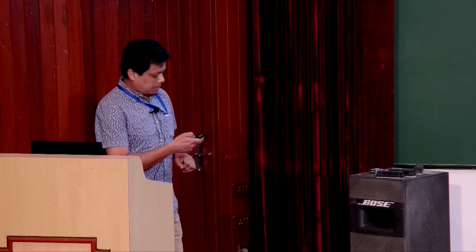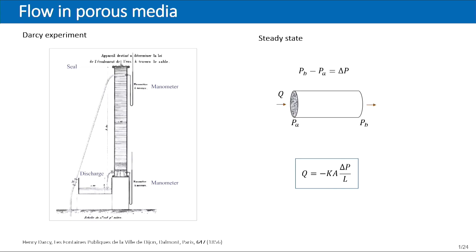Starting from the very basics: Darcy's law. This is a column of sand where water is injected from top to bottom with two pressure sensors. In the steady state, the flow rate is linearly dependent on the pressure drop. The other term is the hydraulic conductivity, which depends on porosity and the size of the sand grains.